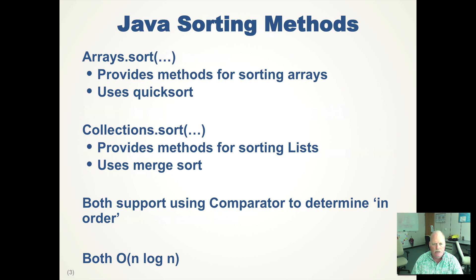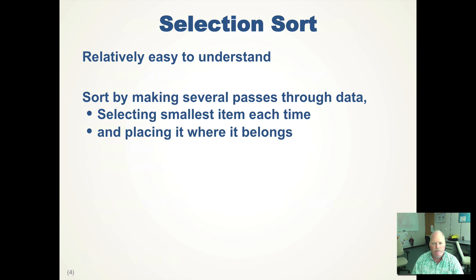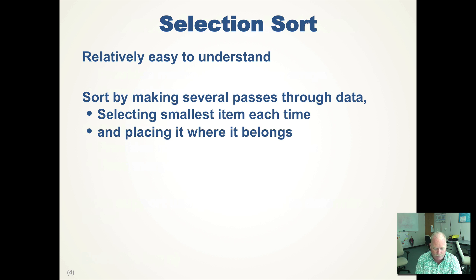Today we're going to talk about a couple of simpler sorts that give you an idea of how you would approach the sorting problem. The first one is the selection sort. It has a very simple algorithm — you look at your array and the first time through you find the smallest or largest item in the array and put it in the first position. You then consider the rest of the array, find the smallest or largest and put it in the next position. You keep doing that all the way through until you have a sorted array.